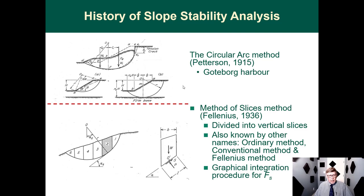Nothing much came out of that 1915 study, and everything on slope stability seemed to lay dormant until 1936, when another landslide occurred and Fellenius was put in charge of trying to analyze when slopes would fail. He came up with the method of slices — taking a slice through the sliding mass and dividing it into vertical slices. This became known as the ordinary method, the conventional method, or the Fellenius method.